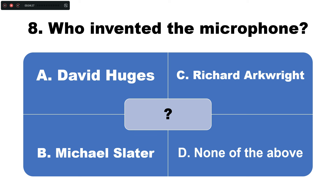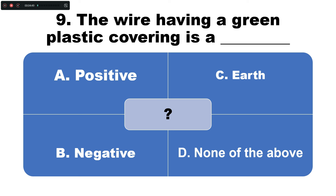Question number eight: Who invented the microphone? Option A: David Hughes, B: Michael Slatter, C: Richard Upright, D: none of the above. The correct answer is option A — David Hughes invented the microphone.